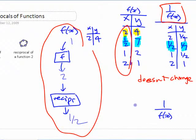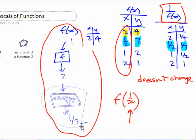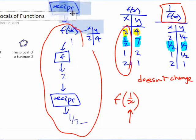The x values don't change. We're not doing f of 1 over x. We're not doing the reciprocal inside the brackets. We don't do it in this order where we look at doing the reciprocal before you apply the function.